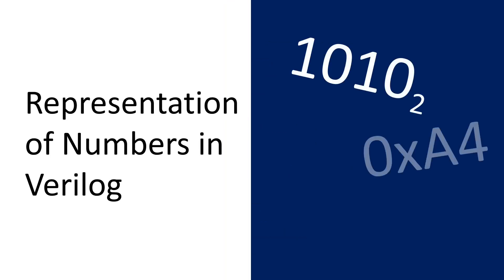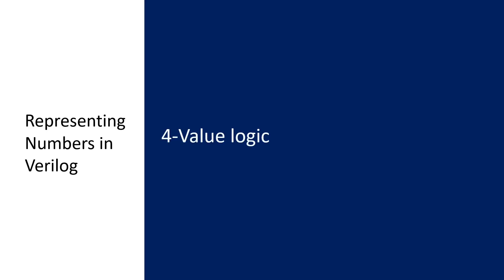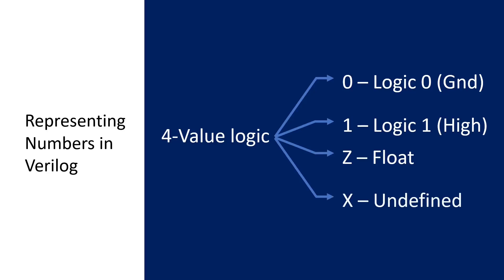Now, we will look at the number representation in Verilog. In Verilog, there will be four types of logic values. The first one is logic zero, representing logic low or ground. Logic one represents logic high. Then we have z, representing float or unconnected. Lastly, we have x, representing undefined.